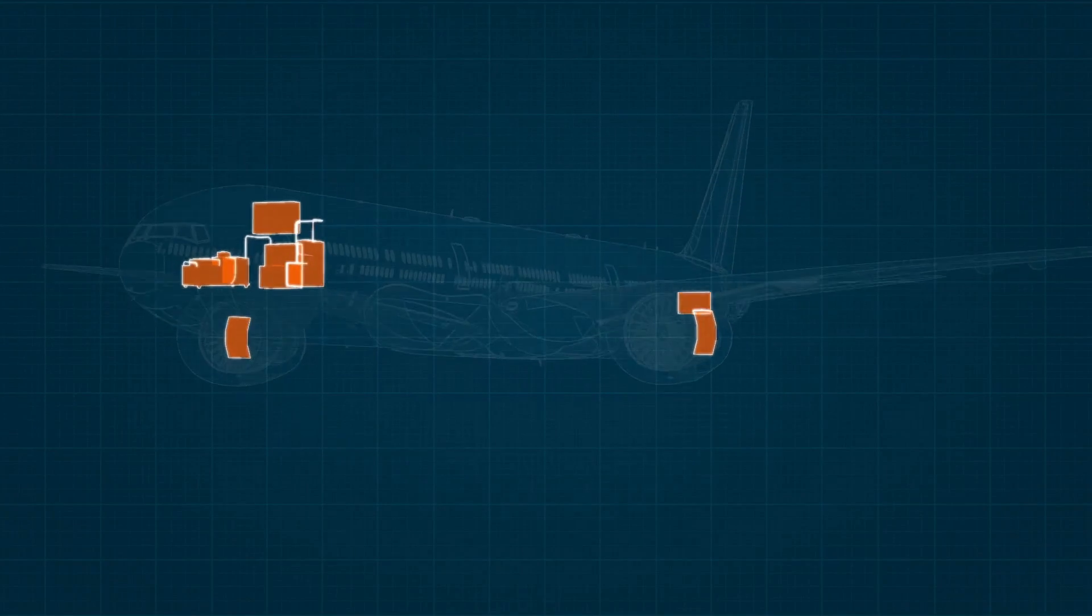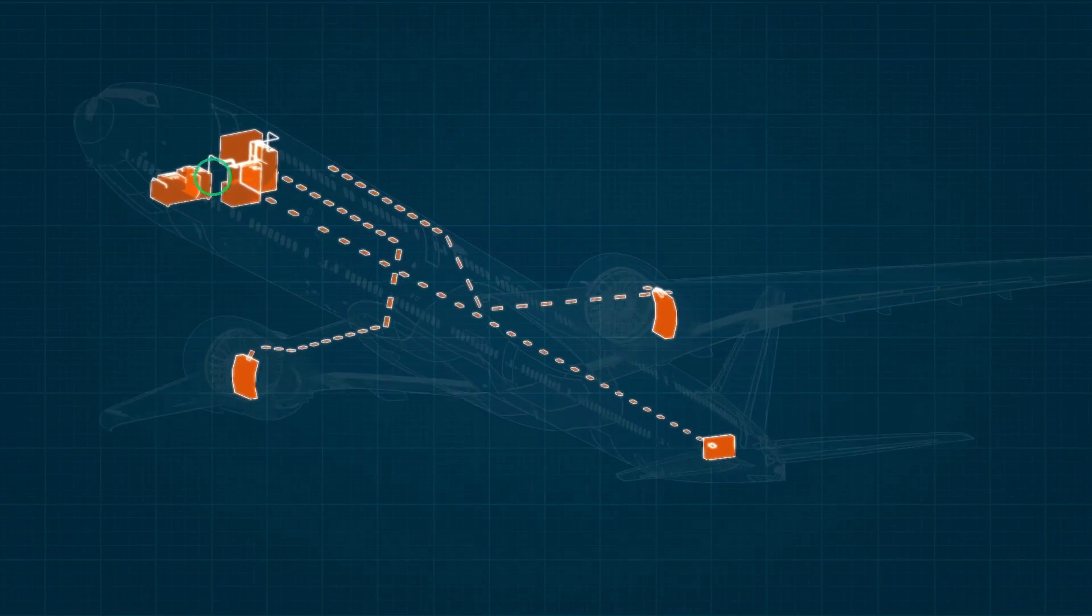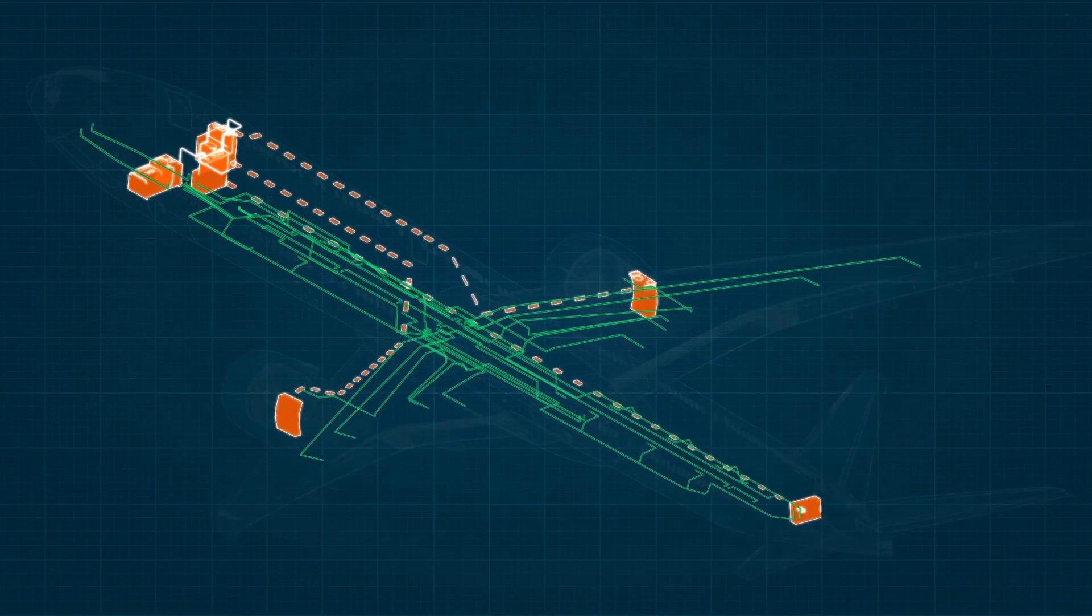Traditionally, air framers will buy the different electrical power components from different suppliers and they will put them together on the aircraft and it will work just fine.